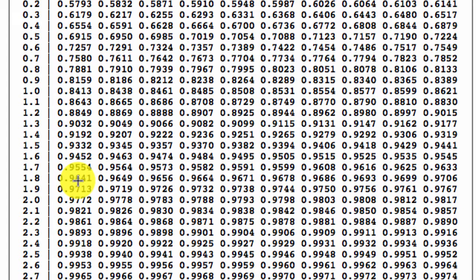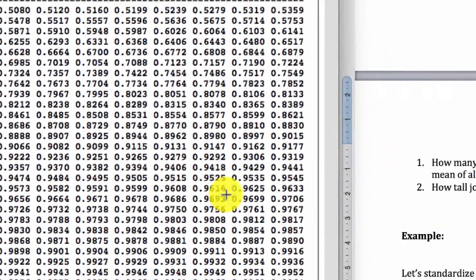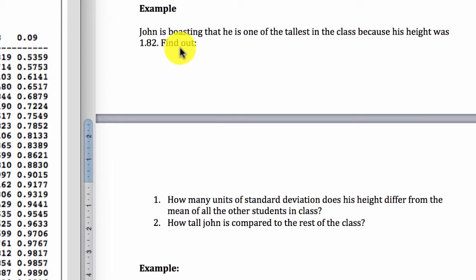Which means John is actually right by boasting that he's one of the tallest in the class because only 4% of the class is taller than John. Now, that's the example for you to estimate what is the probability of a score occurring within a frequency distribution when you know the Z value.